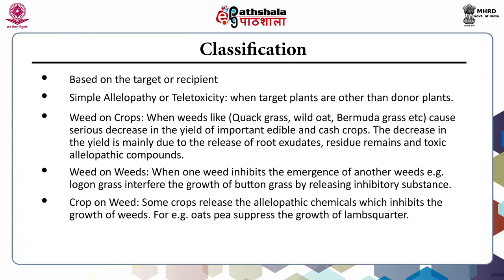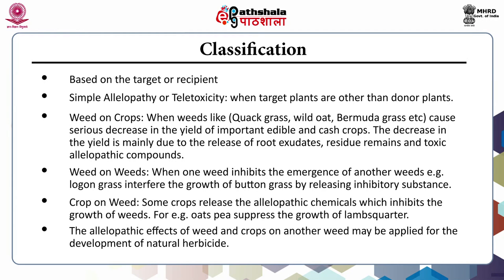Third is crop on weed interference: some crops release allelopathic chemicals which inhibit the growth of weeds. For example, oats and pea suppress the growth of lamb's quarter. The allelopathic effects of weeds and crops on other weeds may be applied for the development of natural herbicides — that is, the phenomena of biopesticide comes into action here.